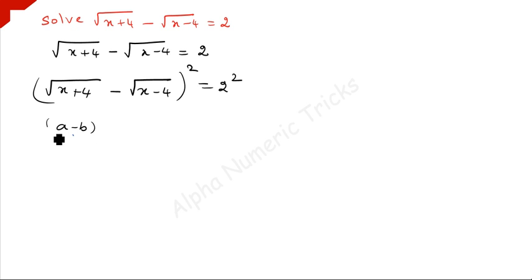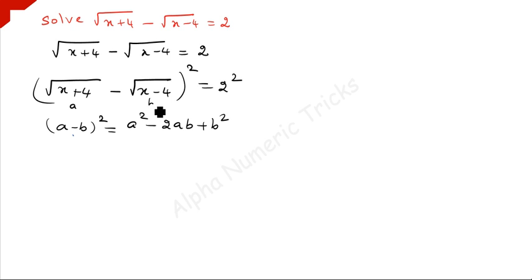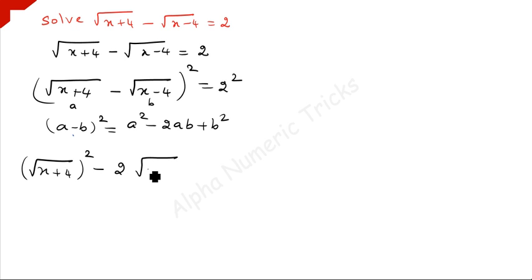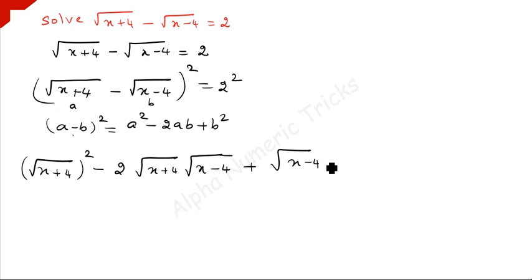Here this is of the form (a minus b) whole squared. The formula is a squared minus 2ab plus b squared. Here a is square root of x plus 4 and b is square root of x minus 4. Applying these values in the formula, we have square root of x plus 4 whole squared, minus 2 times square root of x plus 4 times square root of x minus 4, plus square root of x minus 4 whole squared, equal to 2 squared which is 4.